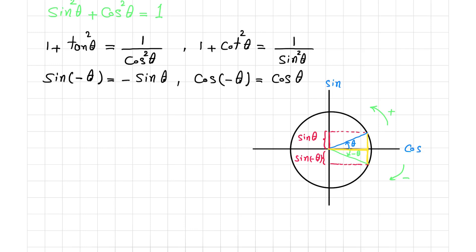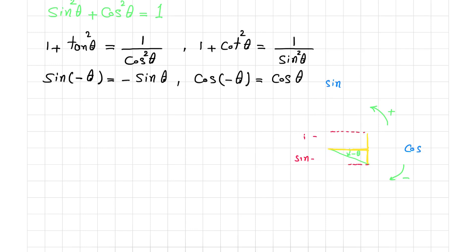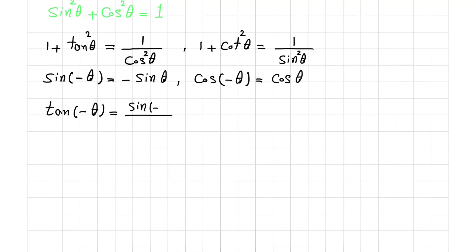Let me delete this and continue the identities. For tangent of minus theta, we have sine of minus theta over cosine of minus theta. We know that sine of minus theta is minus sine of theta, and cosine of minus theta is cosine of theta. So tangent of minus theta equals minus tangent of theta.